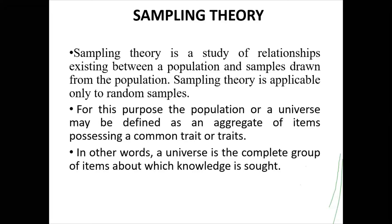Consider a study on information literacy among college students in Mangalore University, where there are 3000 students but your sample size is 100. If a finding says 70% of your 100 sample students regularly go to the library for reading purposes, you should not write 'out of 100, 70 students go to the library.' Instead, you should write '70% of Mangalore University students regularly go to the library for reading purposes.' That is generalization.